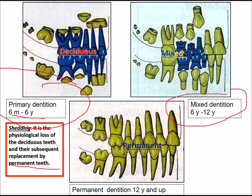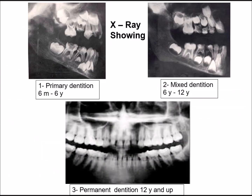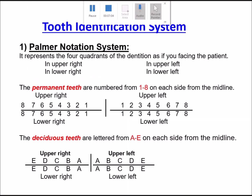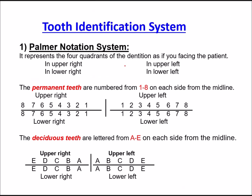In X-ray representation: primary dentition (6 months to 6 years) shows only temporary teeth; mixed dentition shows both temporary and permanent teeth; this orthopantomogram shows permanent dentition — after 12 years, only permanent teeth are present in the jaw.